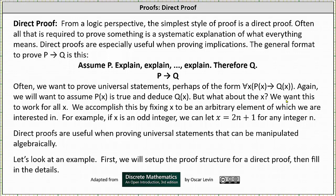But what about the x? We want this to work for all x. We accomplish this by fixing x to be an arbitrary element of which we are interested in. For example, if x is an odd integer, we can let x = 2n + 1 for any integer n.